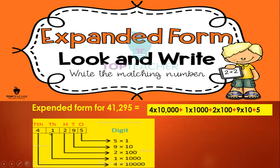This is 4 times 10,000 plus 1,000, it means 1 times 1,000 plus 200, it means 2 times 100. 9, 10, it means 9 times 10, 5, 1, it means 5 times 1. I can write it 5 times 1 or 5 alone. Don't forget to write the plus sign between the numbers.